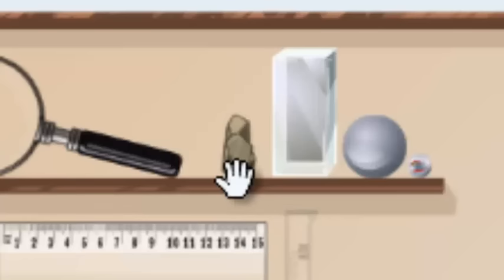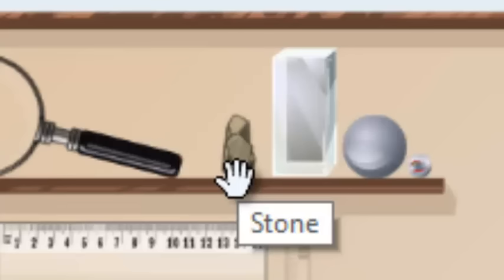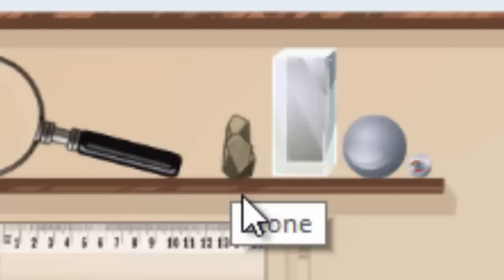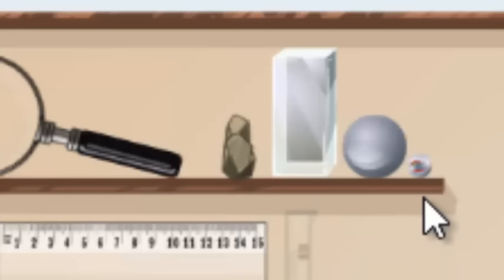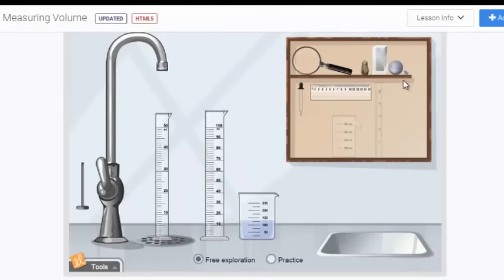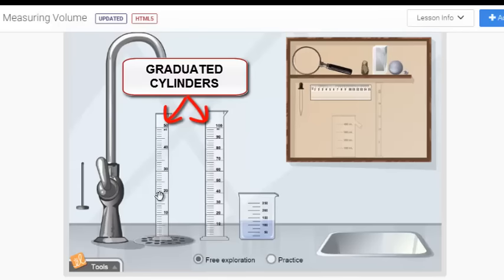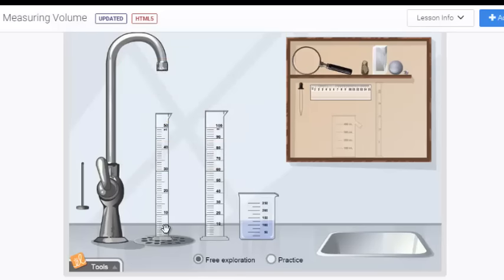However, there are objects that make it more difficult to measure length times width times height because they're not flat and they don't have straight edges, such as this jagged stone or this round sphere or this marble. If you try to put a ruler up to a ball or a marble, you'll notice that it's impossible to measure that. So that's where the graduated cylinder comes into play. These instruments are called graduated cylinders and they measure out volume in units called milliliters. In order to use a graduated cylinder we have to fill it up with water, and there's a couple of ways you should know how to use it.